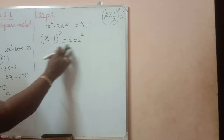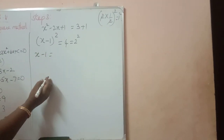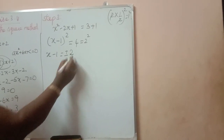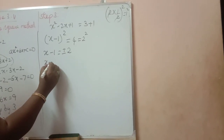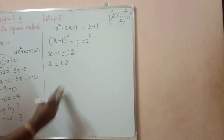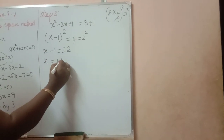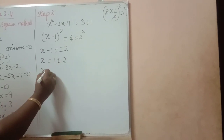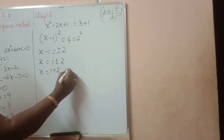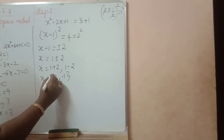So, x minus 1 the whole square is equal to 2 square. When we take square root, we have to write plus or minus. So, x minus 1 equal to plus or minus 2. x is equal to 1 plus or minus 2. That is x equal to 1 plus 2 = 3, and using minus: x equal to 1 minus 2 = minus 1. So, x is equal to 3 comma minus 1.